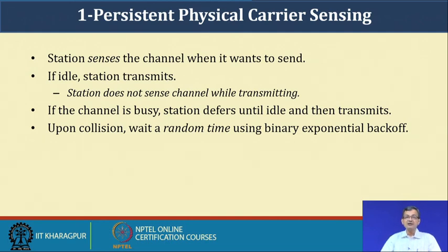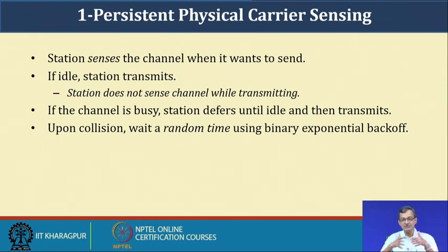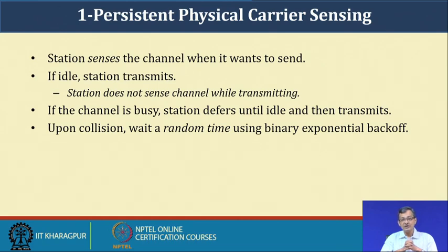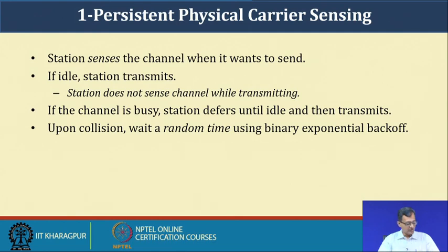One-persistent physical carrier sensing works as follows: a station senses the channel when it wants to send data. If the channel is idle, the station transmits. The station does not sense the channel while transmitting. If the channel is busy, the station defers until the channel is idle and then transmits. Upon collision, it waits a random time using binary exponential backoff.